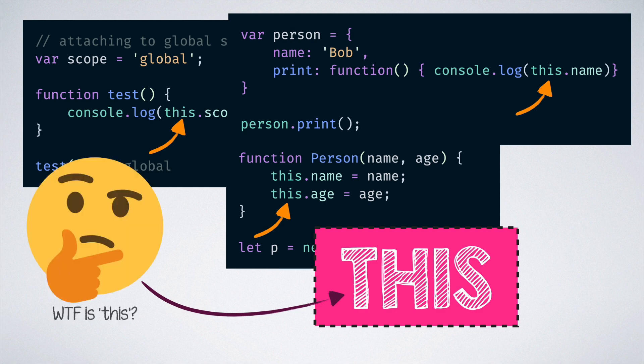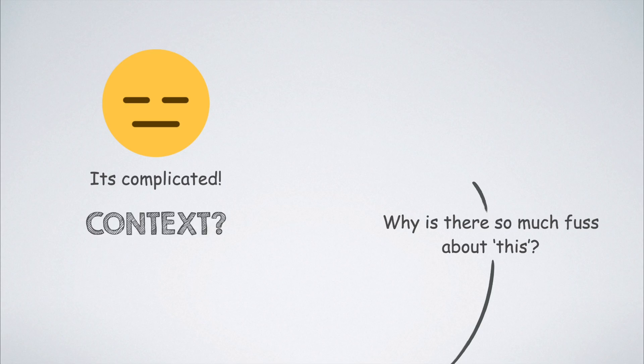If you have ever attended a JavaScript interview before, you have most likely been asked this question. The reason why this question is so common is that there is no one right answer for it. The kind of value the keyword takes depends on the context in which it is used. It also depends on whether strict mode is enabled or not. Let's check out those different scenarios in this video assuming the strict mode is disabled.